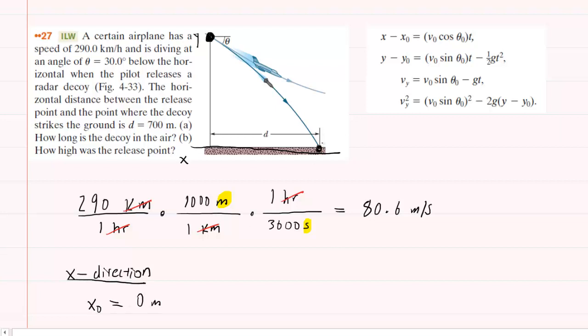But then when the package hits the ground over here, we can see that the final x-coordinate would simply be the length of d. And that is given as 700 meters. So we can write down that x, which is the final x-coordinate, is 700 meters.